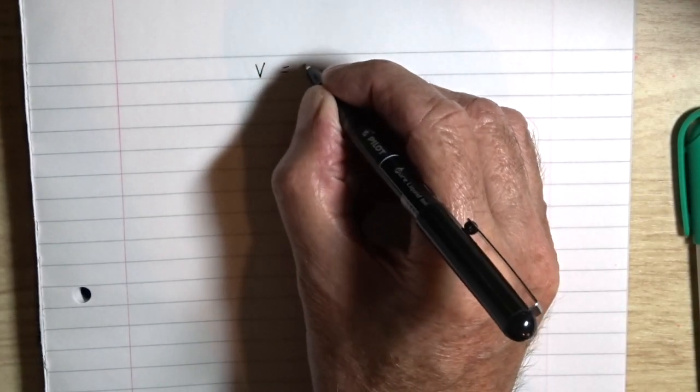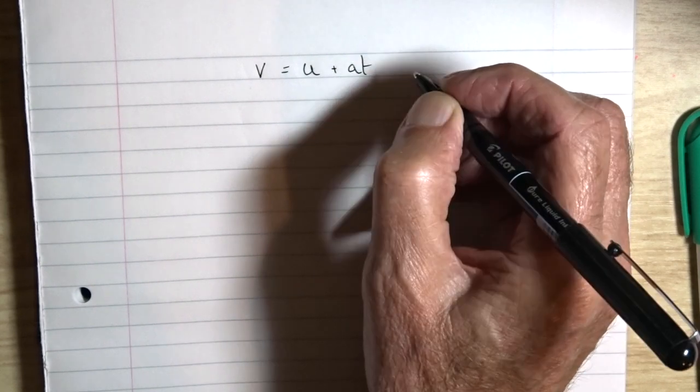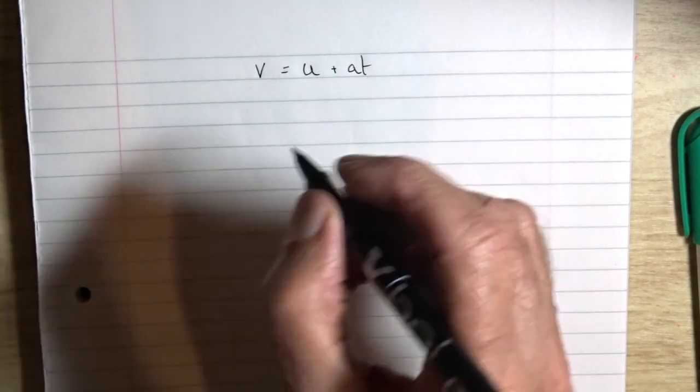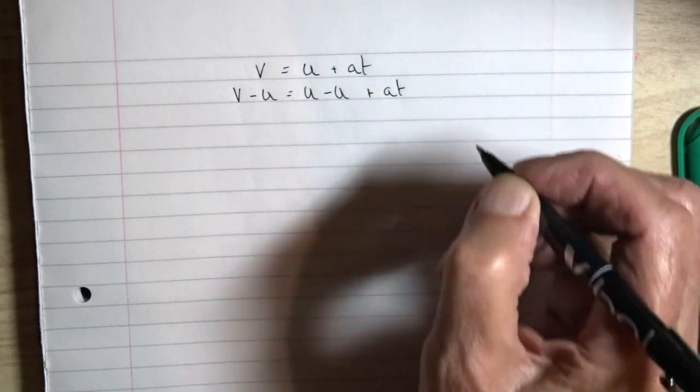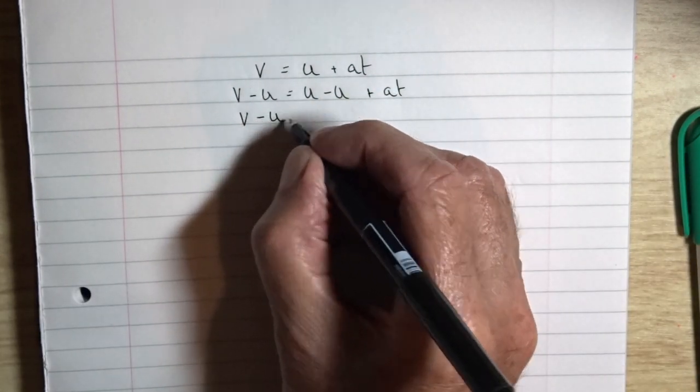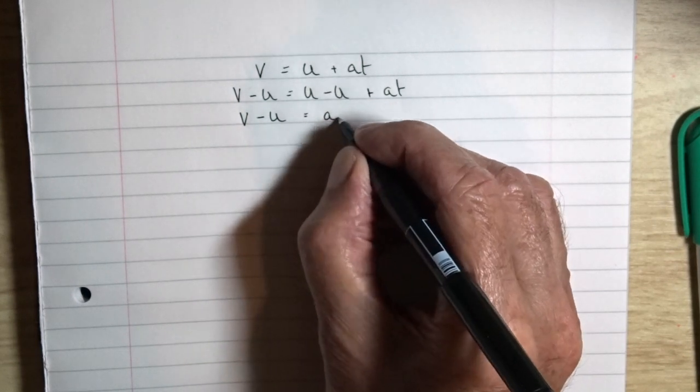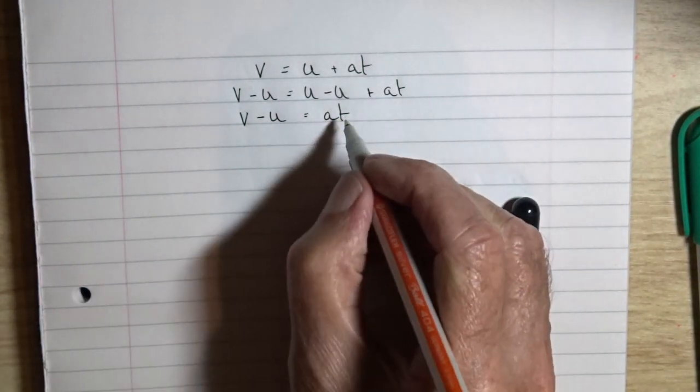Many of the equations we use combine both addition, subtraction, and multiplication, division. A well-known equation, v equals u plus at, one of the equations of motion. If we want to isolate the term at, we can subtract u from each side. So we've got v minus u equals at.